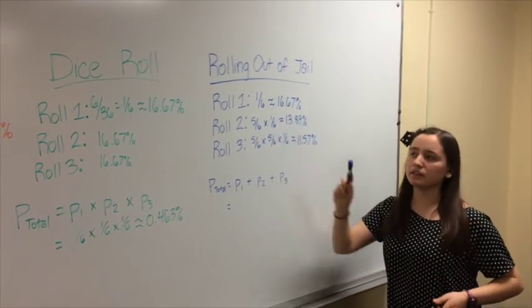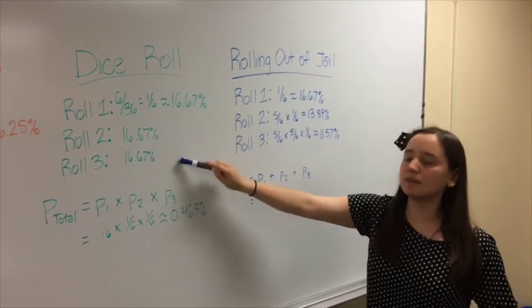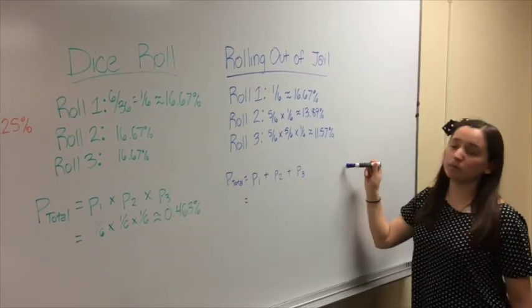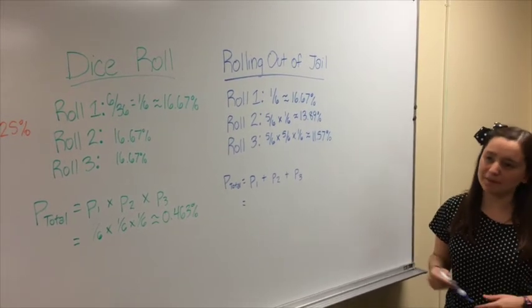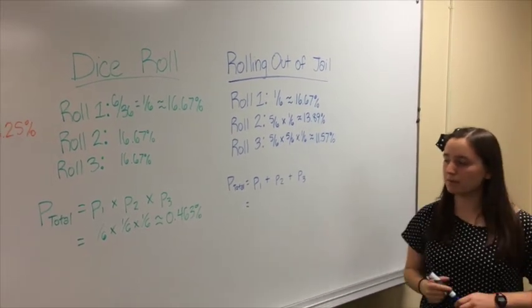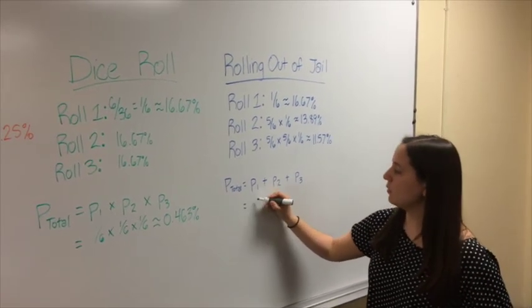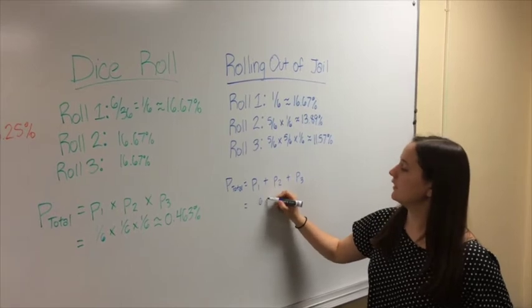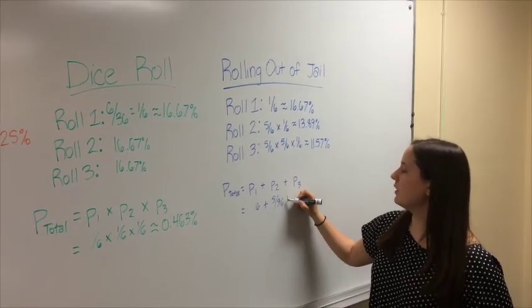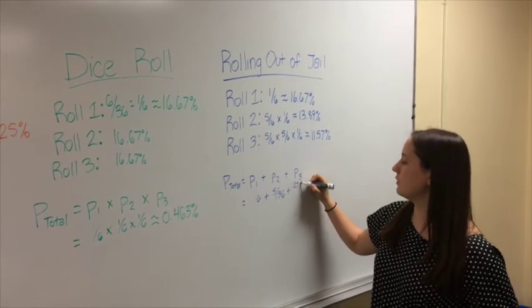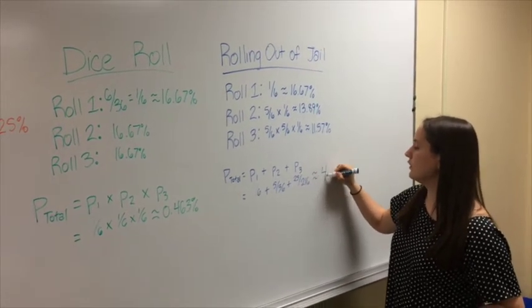Now, for this probability, it's calculated a little differently from this. In this scenario, we need all three of these to happen. And here, over here, when we're rolling out of the jail, we just need any of these. So as a result, we're just going to add these probabilities together to get our total probability here. So if you add together 1 sixth plus 5 over 36 plus 25 over 216, you get roughly 42%.